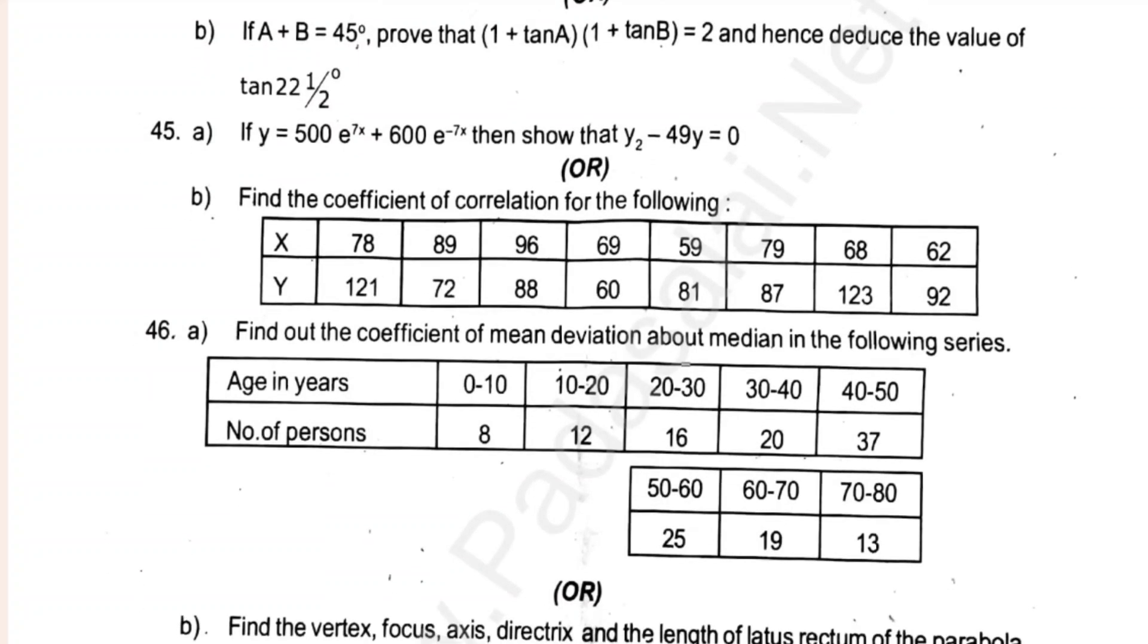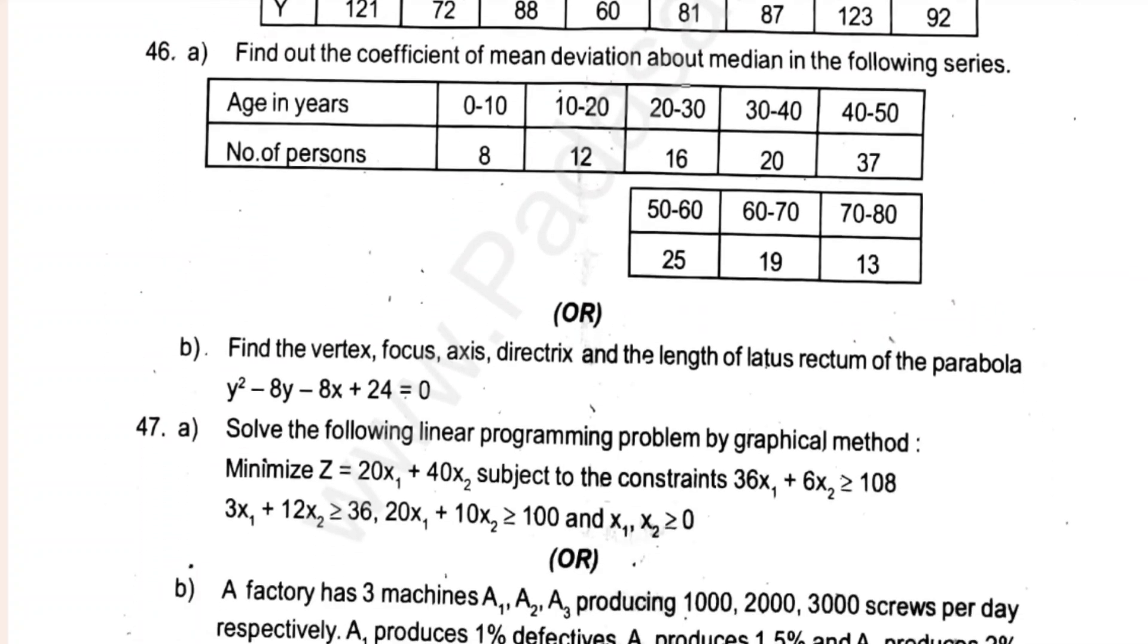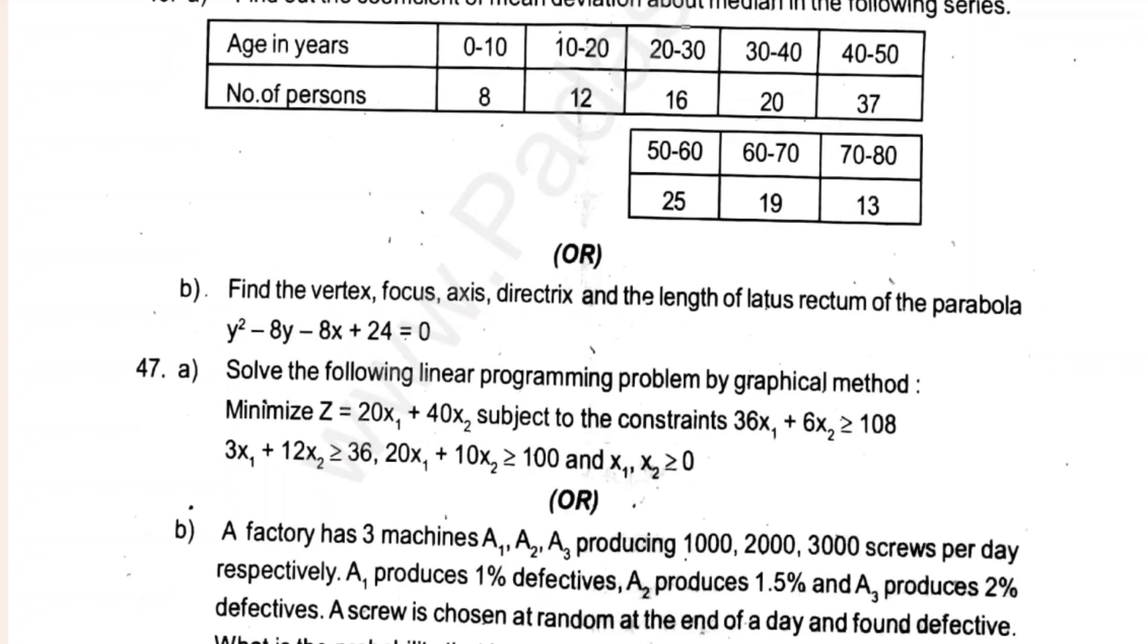Last will be 47, last is 5 mark. Solve the following linear programming problem by graphical method. A factory has three machines A1, A2, A3 producing 1000, 2000, 3000 screws per day respectively. A1 produces 1% defective, A2 produces 1.5% and A3 produces 2% defective. A screw is chosen at random at the end of the day, what is the probability that it comes from machine A1? This is probably an easy one, so you can try to see this one.